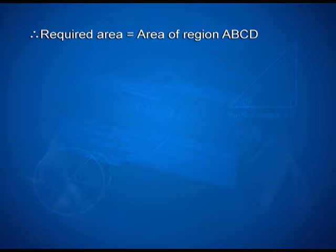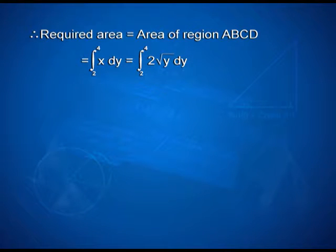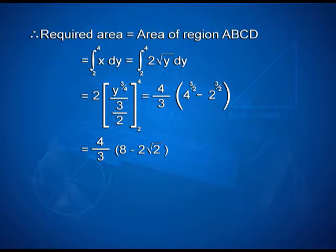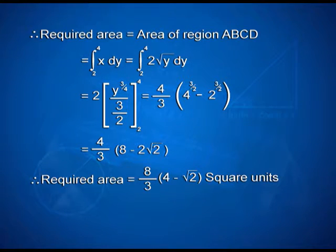Therefore, the required area equals the area of region ABCD, that is the integral from 2 to 4 of x dy = integral from 2 to 4 of 2√y dy = 2 · [y^(3/2) / (3/2)] with limits 2 and 4 = (4/3)[4^(3/2) − 2^(3/2)]. On simplification, we have (4/3)(8 − 2√2). Taking out 2 as common, the required area is (8/3)(4 − √2) square units.